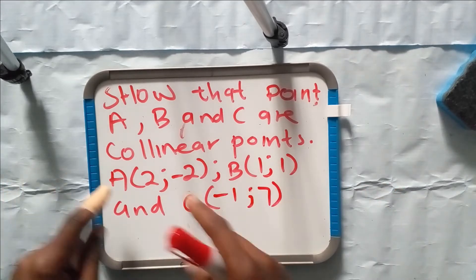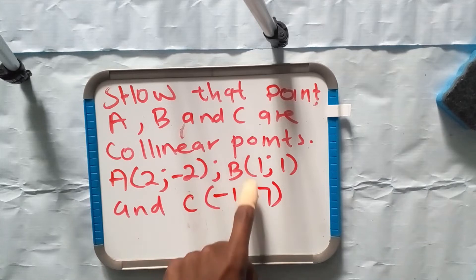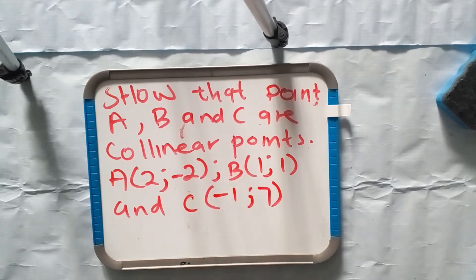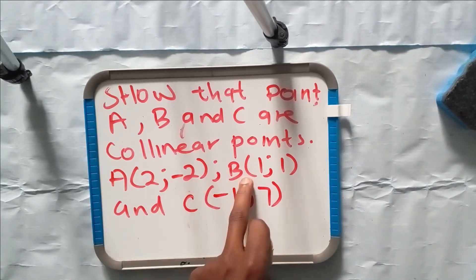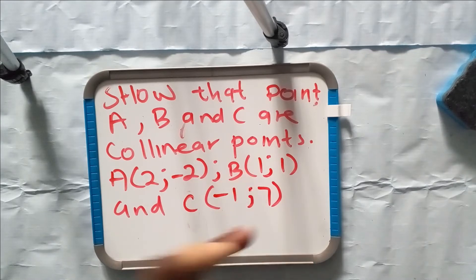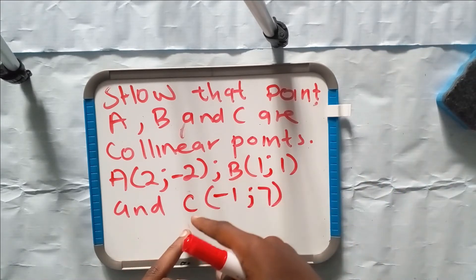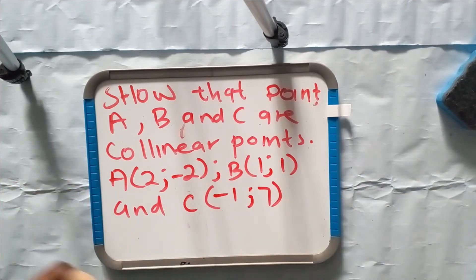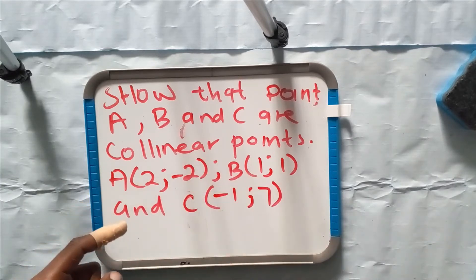The only thing we need to do is calculate the gradient of AB and the gradient of BC. If the gradient of AB equals the gradient of BC, then we can say these points are collinear.